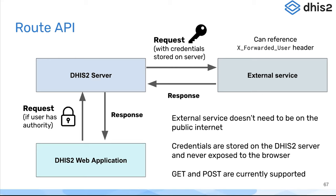The web app simply makes a request to /api/routes and then specifies the route that it wants, along with the path, query string, and headers it wants to send to that external service. The DHIS2 server then authenticates that request — this route is only available to users with a particular authority or a particular group of users, so if you're not in that group, the request is rejected. But if it is allowed, it will forward that request on to the external service and include credentials and other headers, enriching that request with certain properties configured in the DHIS2 server, so those properties are not exposed to the DHIS2 web application.